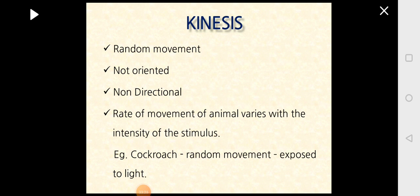Next, we will start with kinesis. Unlike taxis, kinesis is not an oriented movement. When an animal is exposed to a stimulus, it starts moving randomly without orientation or a particular direction, and the rate of movement depends on the intensity of the stimulus. If the stimulus is mild, the movement is less; if strong, the movement is more vigorous. For example, when you switch on the light, the cockroach starts moving in all directions because it dislikes light — it is negatively phototaxic.